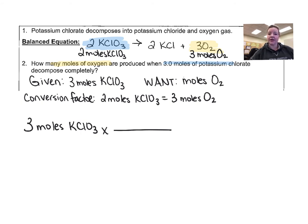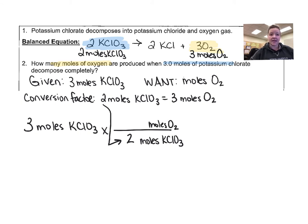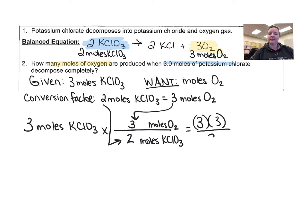Remember that the unit we are given has to go on the bottom. Since we are given moles of potassium chlorate, we're going to put moles of potassium chlorate on the bottom of our conversion factor, and according to our balanced reaction we have two moles of potassium chlorate. On the top of our conversion factor we're going to place the unit that we want — moles of oxygen — and according to our balanced equation we have three moles of oxygen being produced. Now that we have our conversion factor set up, we can go ahead and multiply and solve.